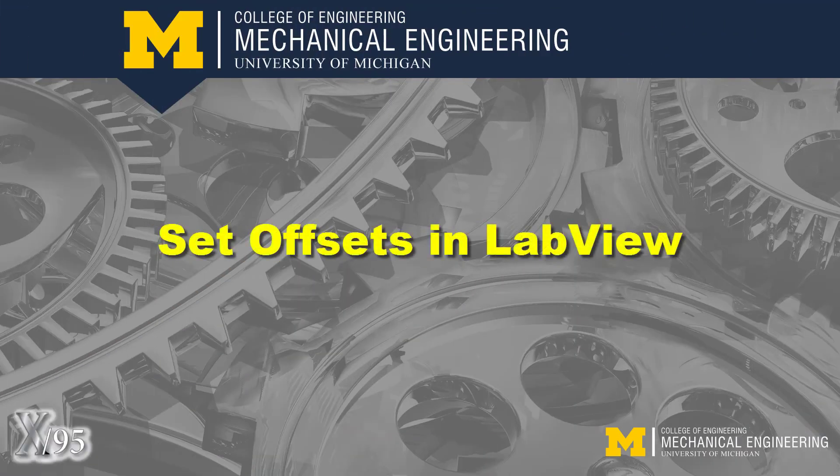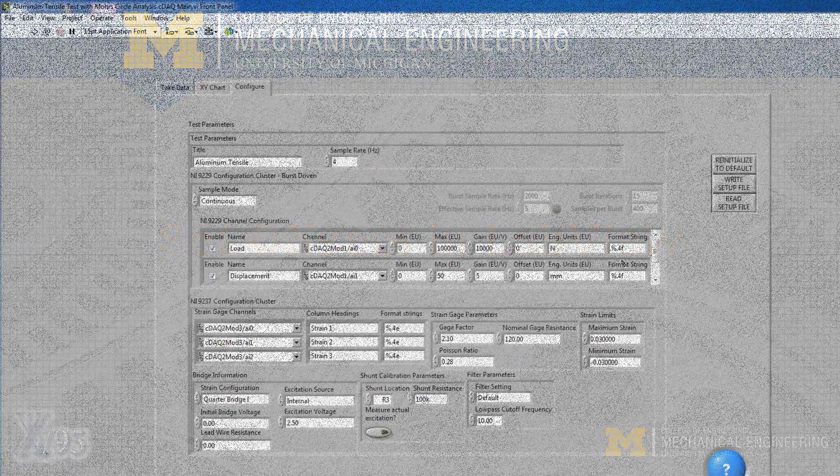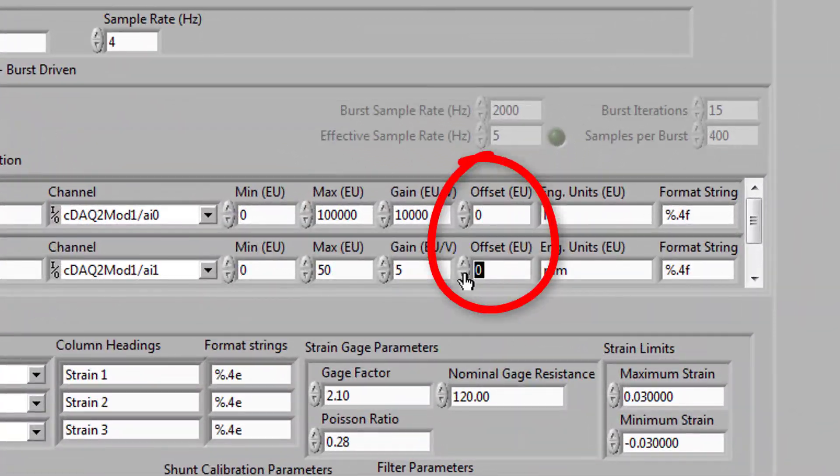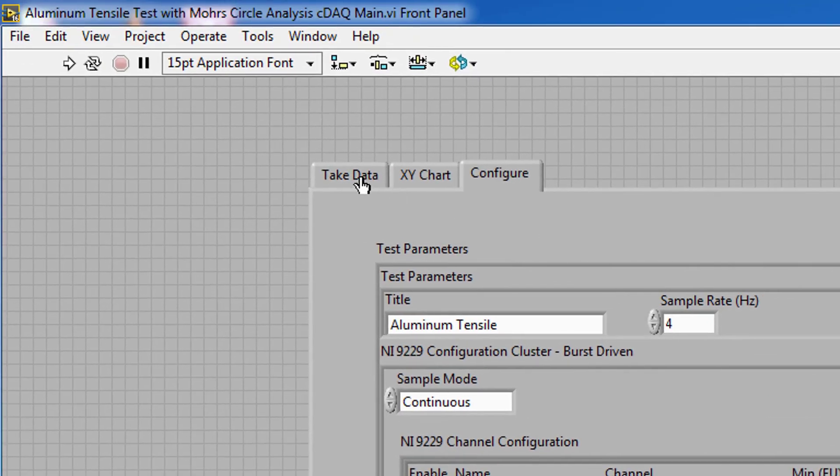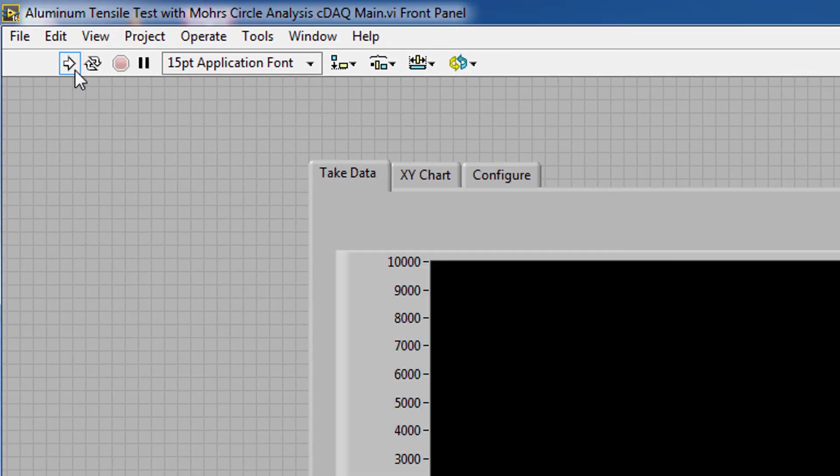The LabVIEW offsets are used to zero load and position. On the Configuration panel, set both offsets to zero. Select the Take Data tab to open the front panel and start LabVIEW.